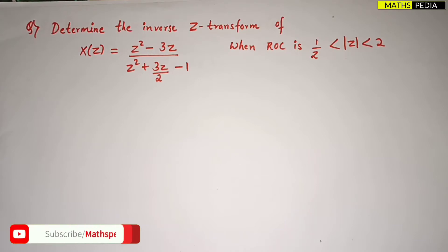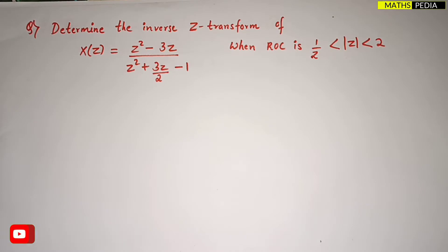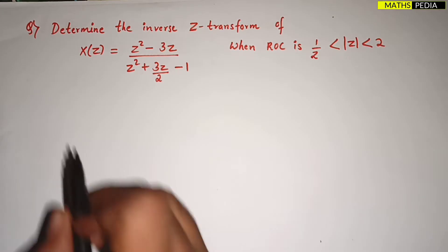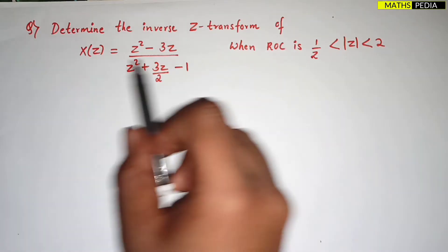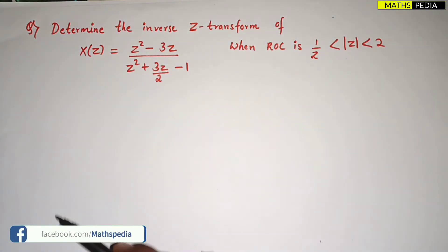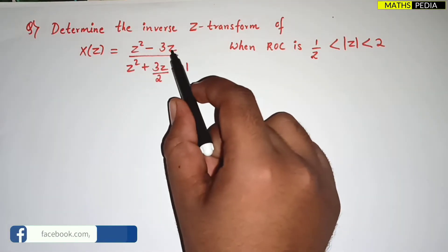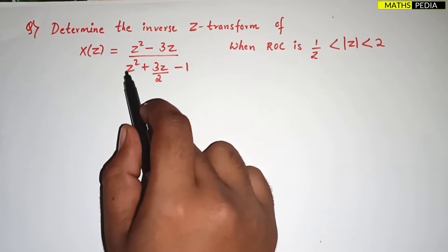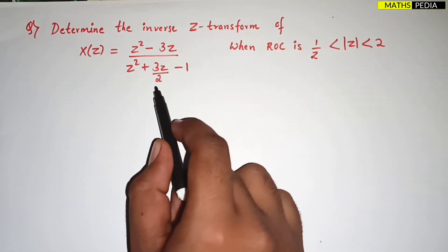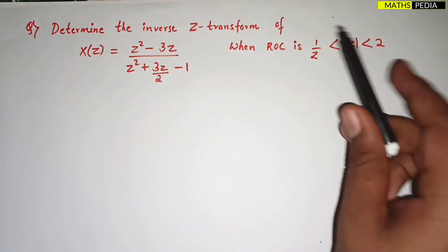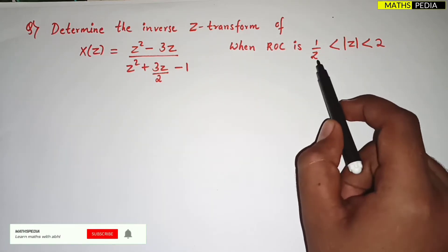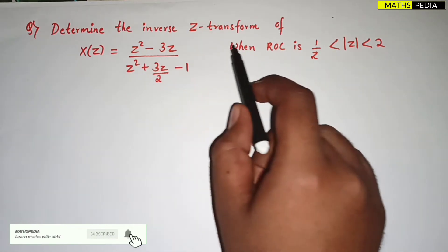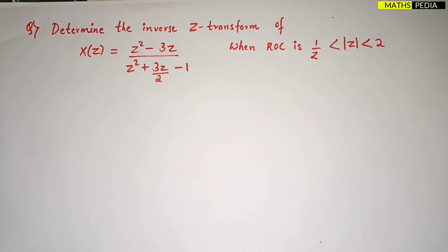In this video we are going to solve a problem based on inverse Z transform using the partial fraction method. The question is: determine the inverse Z transform of X(Z) = (Z² - 3Z) / (Z² + 3Z/2 - 1), where the ROC is between 1/2 and 2. We will follow certain steps and then consider the ROC.